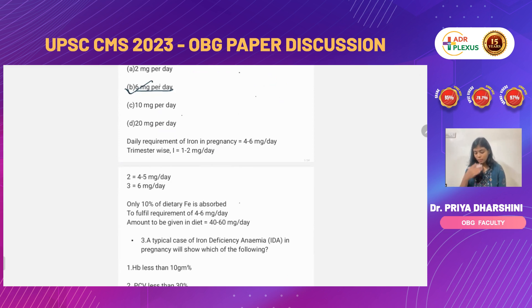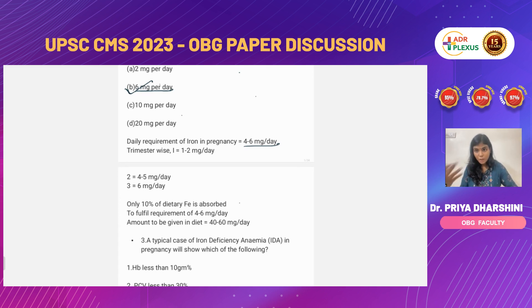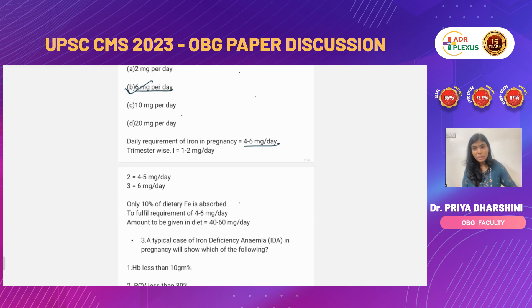For the entire pregnancy, the daily requirement is 4 to 6 milligrams per day. That is why we supplement 60 milligrams of iron — because only 10% of the iron we take is absorbed by the body. So if we take 60 milligrams, only 6 milligrams will be absorbed.